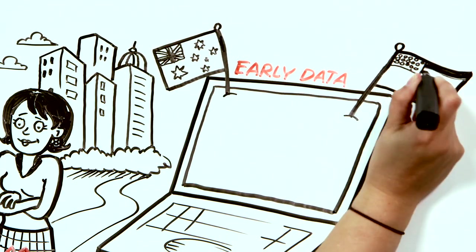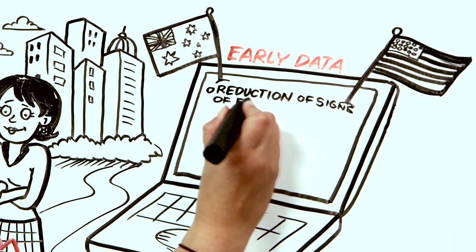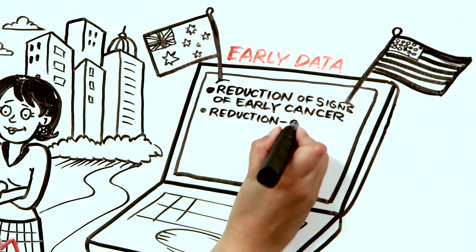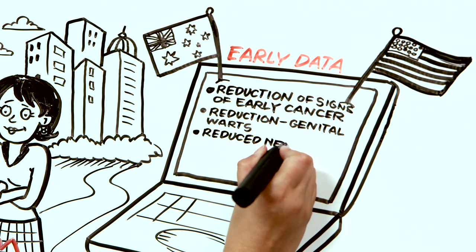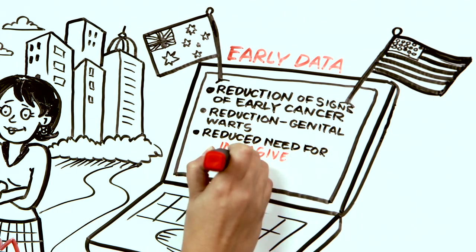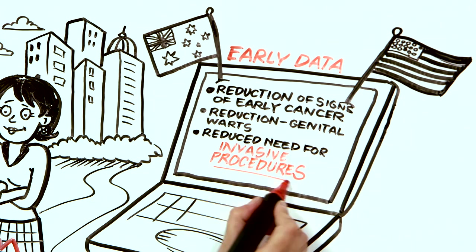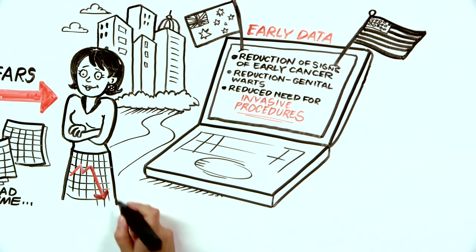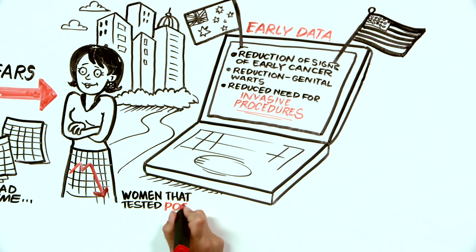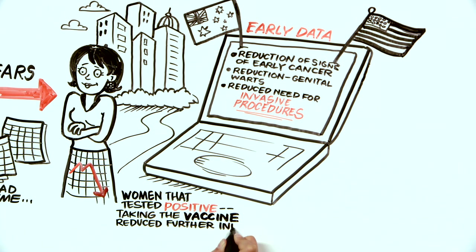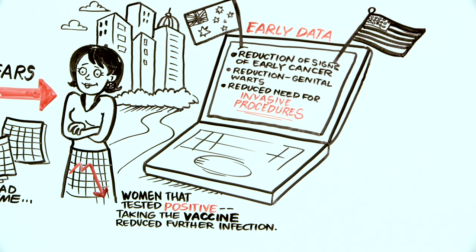Early data, especially from Australia and the US, shows a reduction in the signs of early cancer, as well as reduced rates of genital warts, and reduced need for procedures to assess and treat cervical cancer, such as repeat pap smears, colposcopies, and biopsies. As well, for women that have already tested positive for HPV in the past, taking the vaccine actually helped reduce further HPV infection.